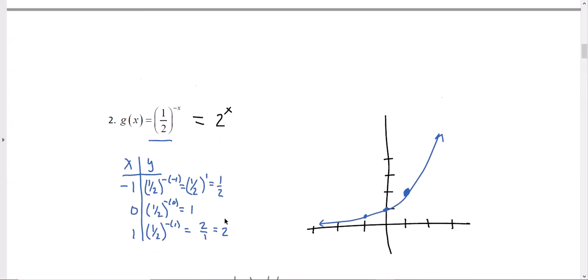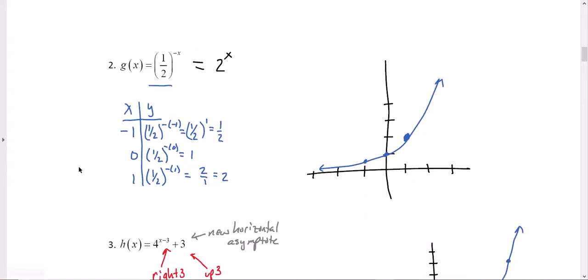Next example. If g(x) = (1/2)^(-x). Now, we could do 1/2 to the -x, and I've done that here in the chart. So let's talk about that first. Again, I'm going to use my three easiest input values: -1, 0, and 1.